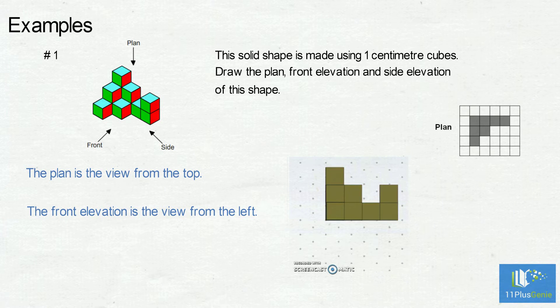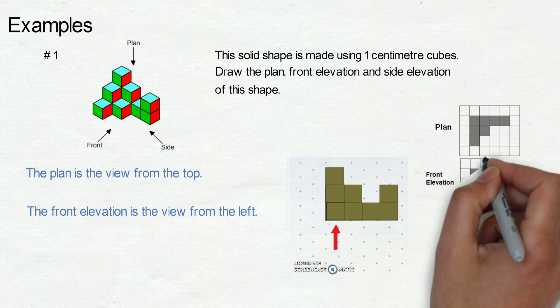From left to right there are three, then two, then one, and then two blocks on top of each other. The front elevation looks like this.